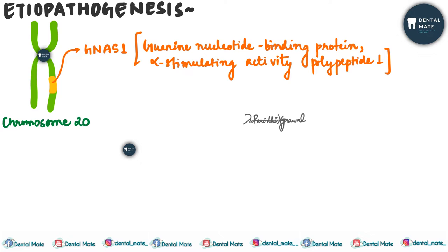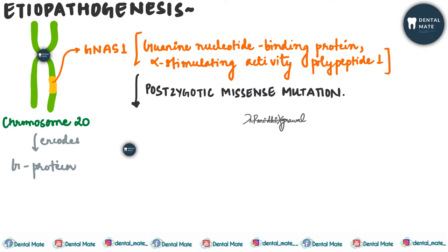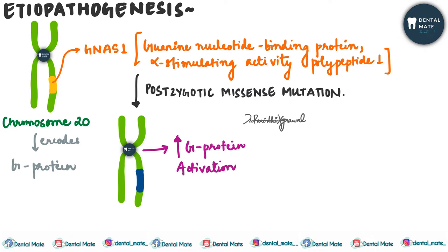This gene basically encodes for the G-protein. There occurs a post-zygotic missense mutation in this gene, because of which there is excessive or increased production of the G-protein. These DNA changes are acquired from the zygote stage onwards throughout the lifespan.